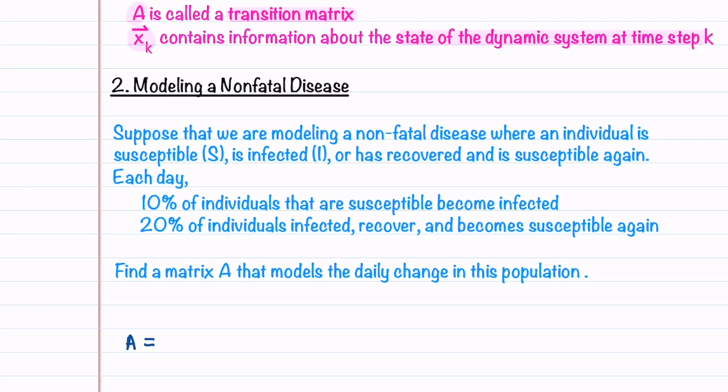In this video, we're going to look at how to model a non-fatal disease using a transition matrix. We'll suppose we're modeling a disease where an individual is either susceptible, infected, or has recovered and is susceptible again. Each day, 10% of individuals that are susceptible become infected and 20% of individuals infected recover and become susceptible again.